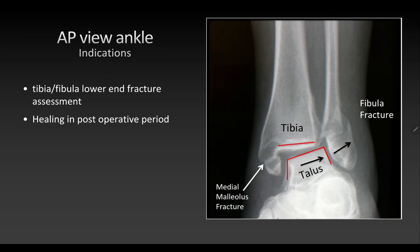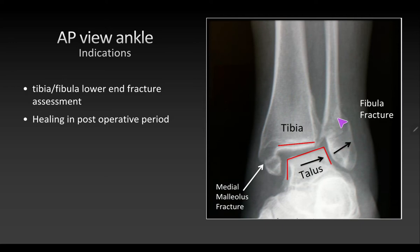Indications for an ankle x-ray include suspected fracture of the lower end of tibia or fibula, assessment of the integrity of the ankle joint, and identification of associated fractures. You can see here there is a medial malleolus fracture and a lateral malleolus fracture as well, with the talus visible. X-rays are also taken in the post-operative period to assess whether the treatment has led to proper healing of the bones.